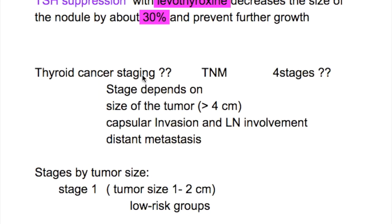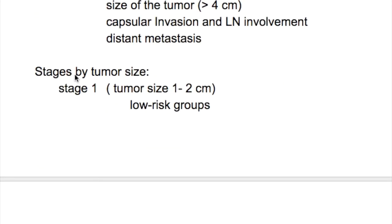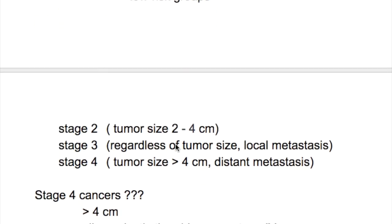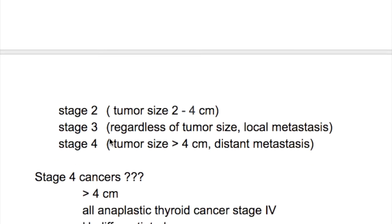Thyroid staging is done with TNM classification, with 4 stages based on tumor size, local invasion, and distant metastasis. Stage 1: tumor size 1 to 2 cm, low-risk growth. Stage 2: tumor size 2 to 4 cm. Stage 3: regardless of tumor size, with local metastasis. Stage 4: tumor size more than 4 cm with distant metastasis.